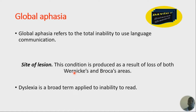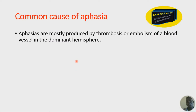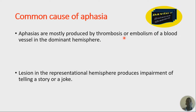Let me define dyslexia for you — this is just a broad term applied to inability to read. If you are unable to read, we call it dyslexia. Now, causes of aphasia: one, it is mostly produced by thrombosis or embolism of a blood vessel in the dominant hemisphere — when you have a clot within the blood vessel in the dominant hemisphere, it can affect Wernicke's area and you end up having aphasia. Also, lesions in the non-dominant hemisphere produce impairment of telling a story or a joke — these people do not know how to tell a joke.